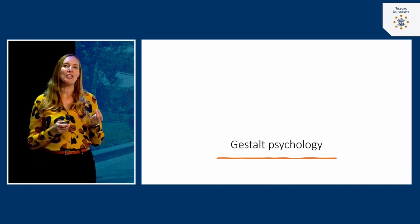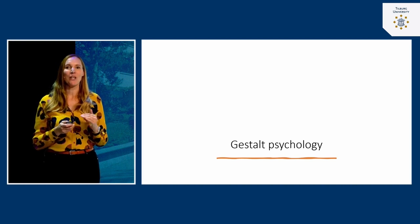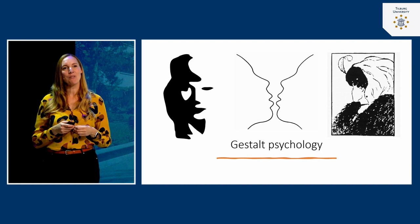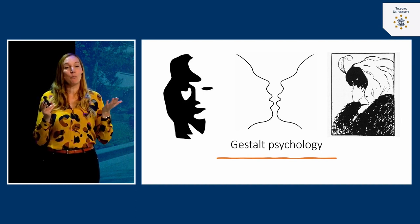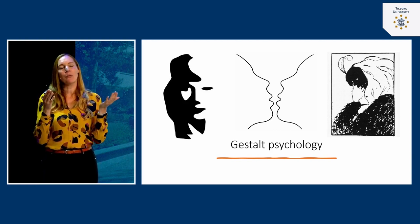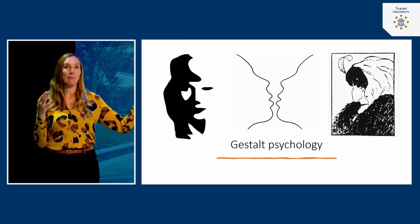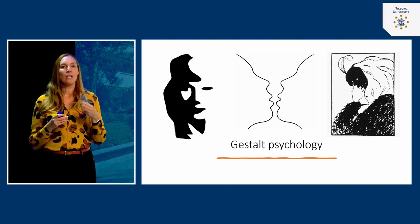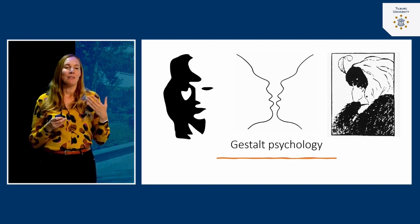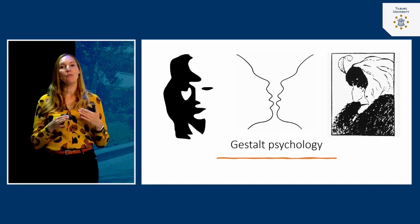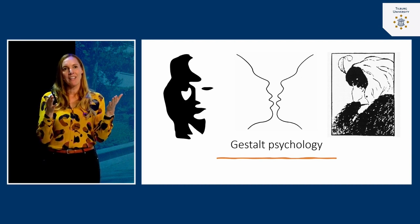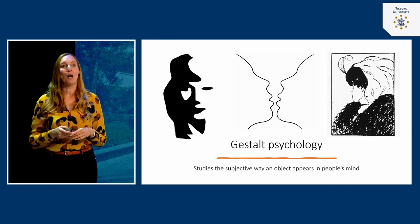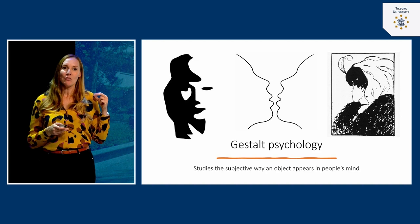Another question social psychology addresses is how a person experiences a situation, because this can differ greatly per person. This is the core idea of gestalt psychology. You're probably familiar with these types of pictures — in the middle, you can either see two people nearly kissing or a vase, and what you see differs per person. On the left, you can see either an old woman or a young woman depending on your perspective. Both interpretations are correct, and in the same way people can experience social situations very differently, which can lead to a lot of miscommunication and problems.